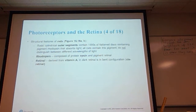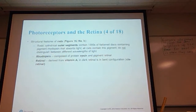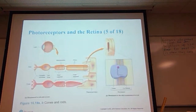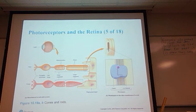Rhodopsin is composed of a protein called opsin and the pigment retinol. Retinol is derived from vitamin A. In the dark, retinol is in a bent configuration called cis-retinol. Here is the blown-up structure of a rod and cone showing the opsin, the cis-retinol, and the rhodopsin molecule, along with the pigmented layer of the retina and the rods and cones.